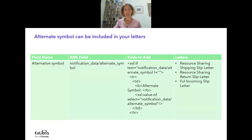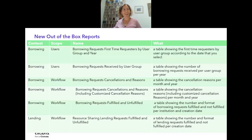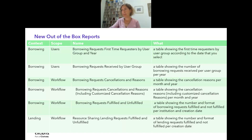Now to analytics: there are a bunch of new out-of-the-box reports for analytics. For example, there is a new borrowing request cancellation report, which is a great report to have. There is also a lending resource sharing requests filled and unfilled report, and the counterpart borrowing requests fulfilled and unfulfilled. Take a look and see if these new reports help you.